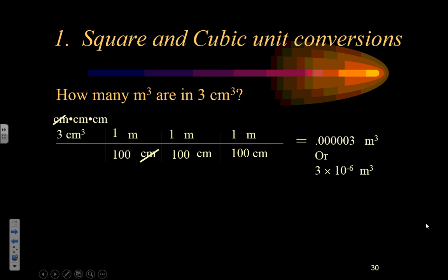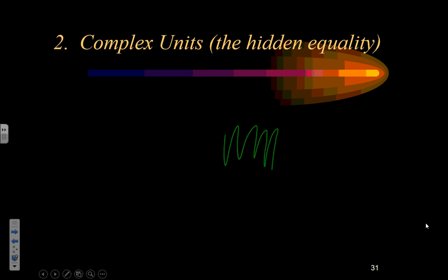Now if I had a squared unit instead of a cubic unit, just stop at two conversions. That would convert a centimeter squared into a meter squared. So that's the simple way to handle square and cubic unit conversions.